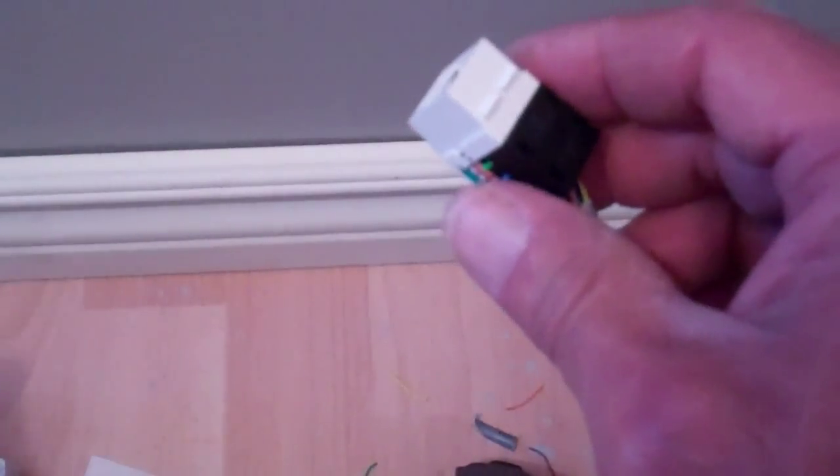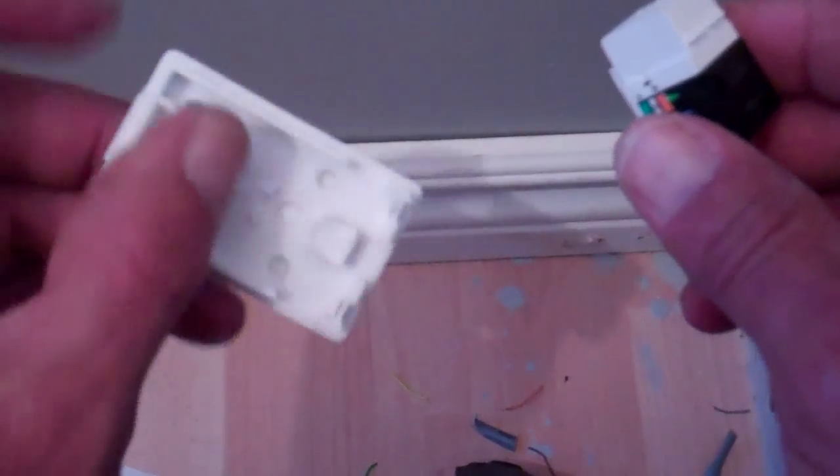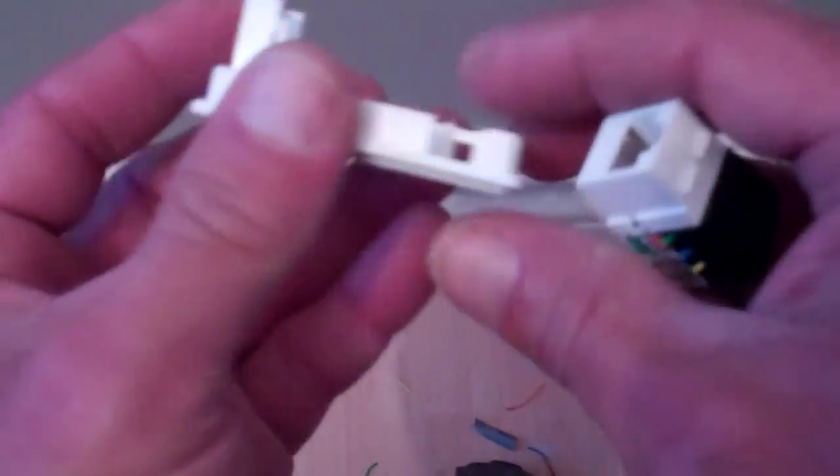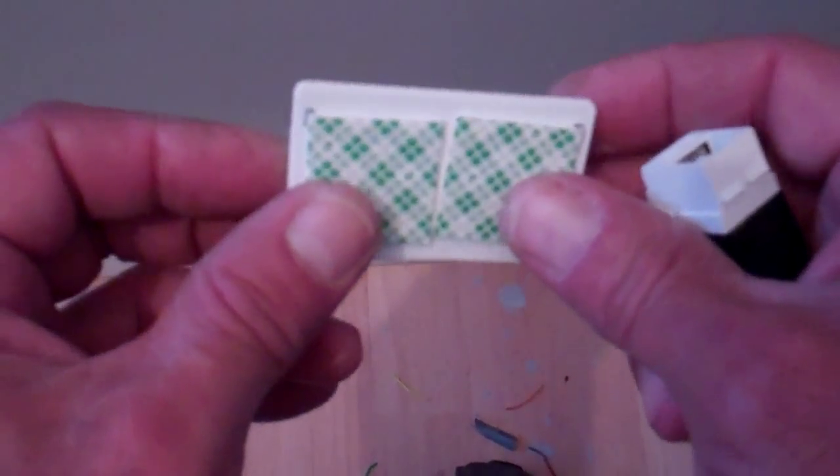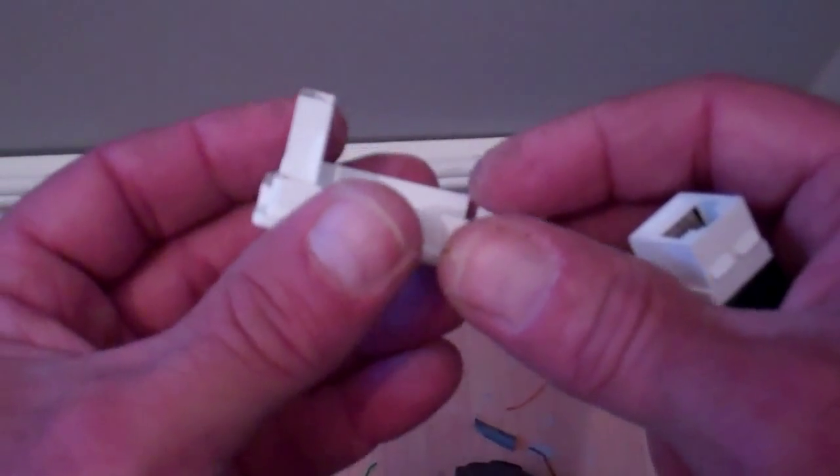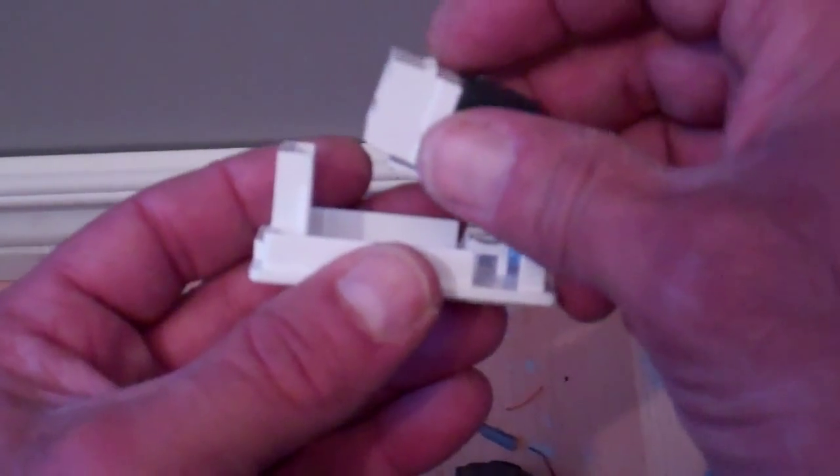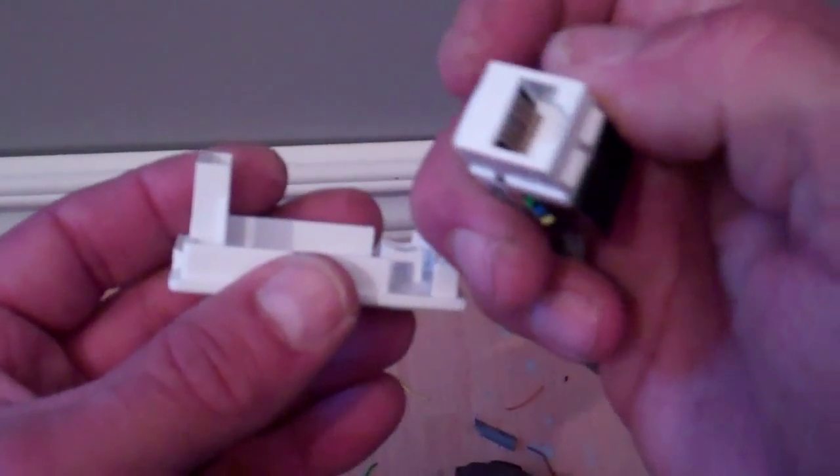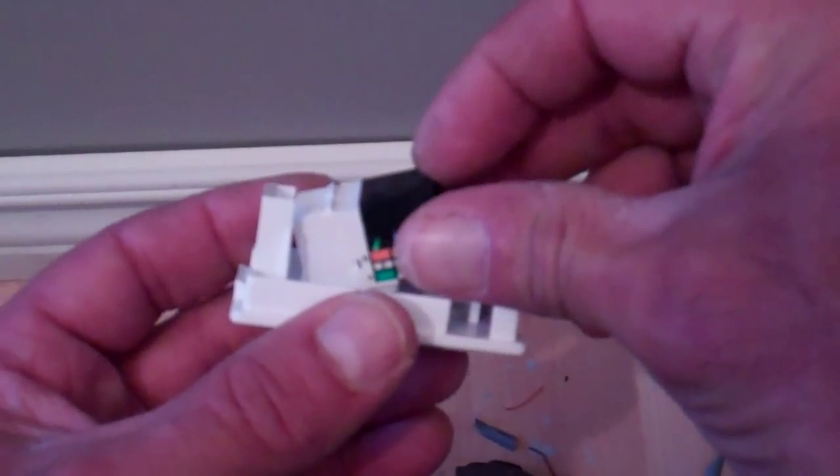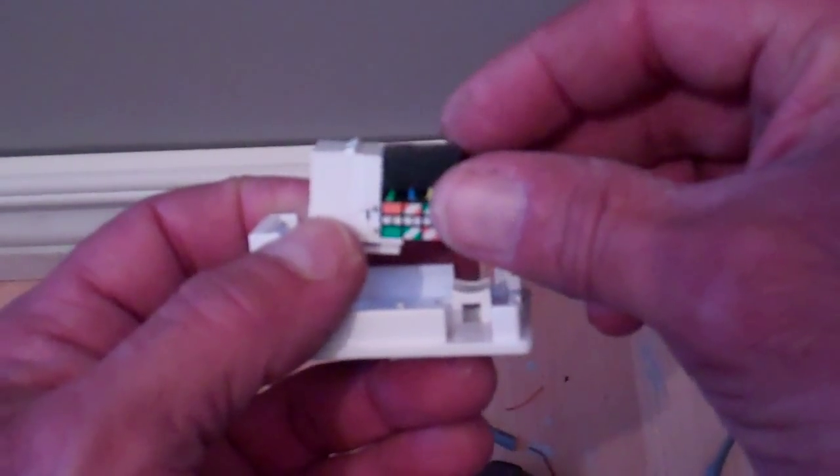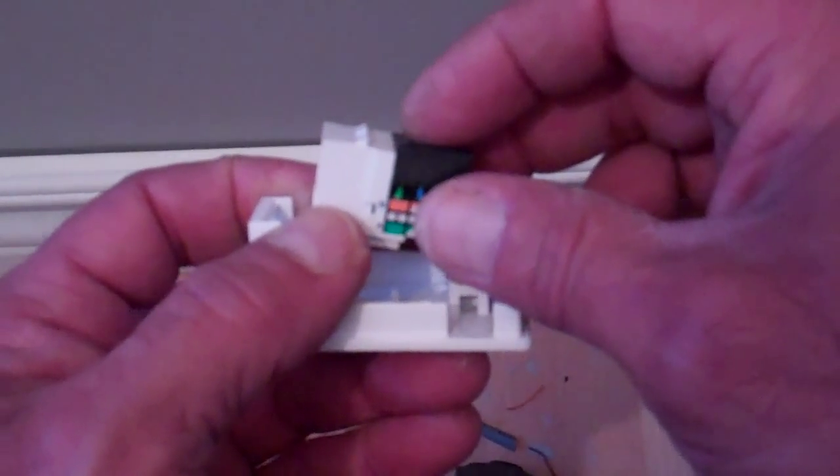I'm going to move that so you can see it. Place that over your wires like so and push that into place. Now we take the bottom of the surface mounted jack plate. This is going to go into place in here so that our dust cap, on this Leviton product, is facing up.